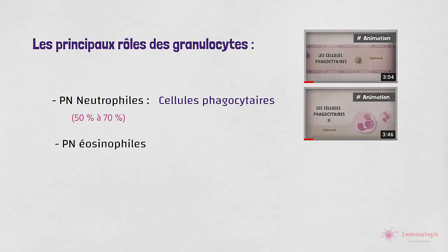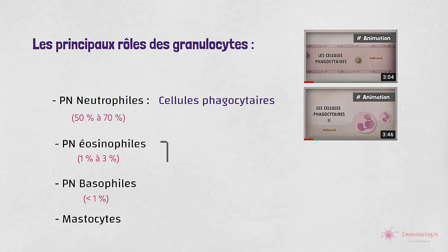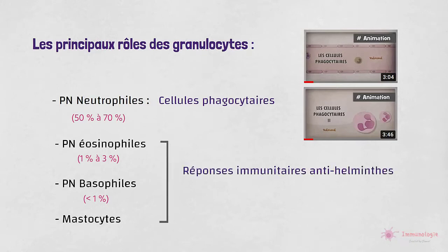Les éosinophiles, les basophiles et les mastocytes sont trois types de cellules jouant un rôle important dans les réponses immunitaires qui protègent contre les parasites, mais aussi dans les maladies allergiques.